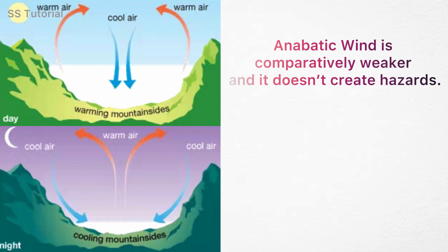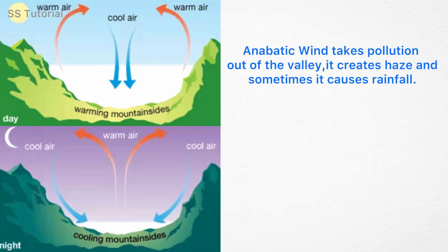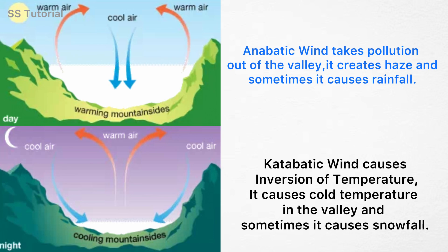Anabatic wind is comparatively weaker and does not create hazards. But katabatic wind is comparatively stronger and sometimes creates hazards. Anabatic wind takes pollution out of the valley and causes haze and sometimes rainfall. And katabatic wind causes temperature inversion and cold temperatures in the valley, and sometimes causes snowfall.